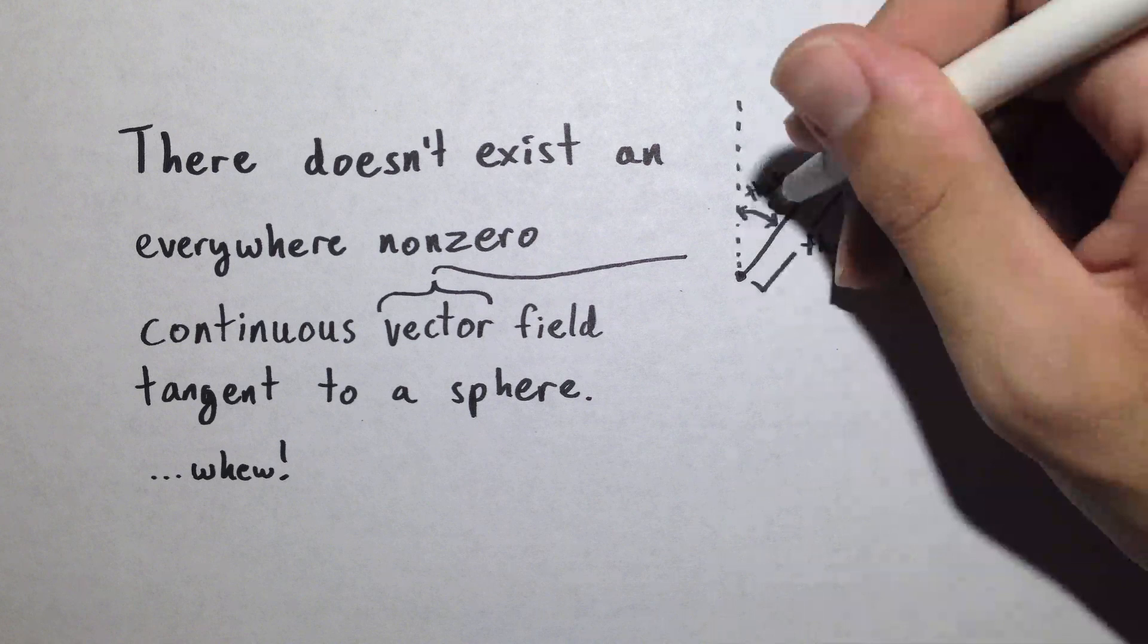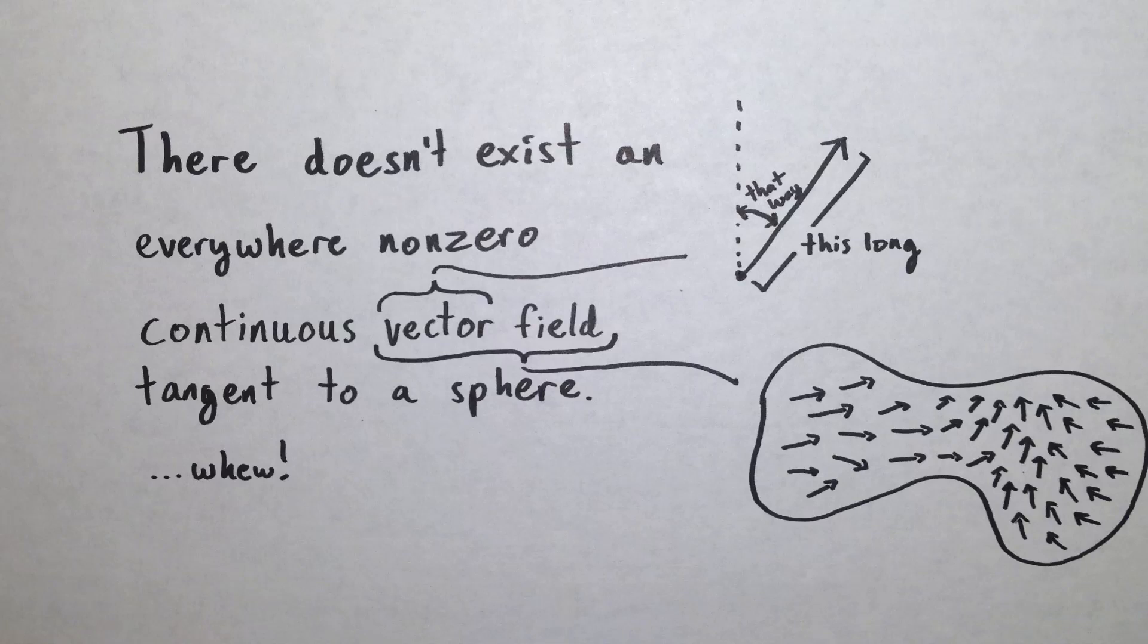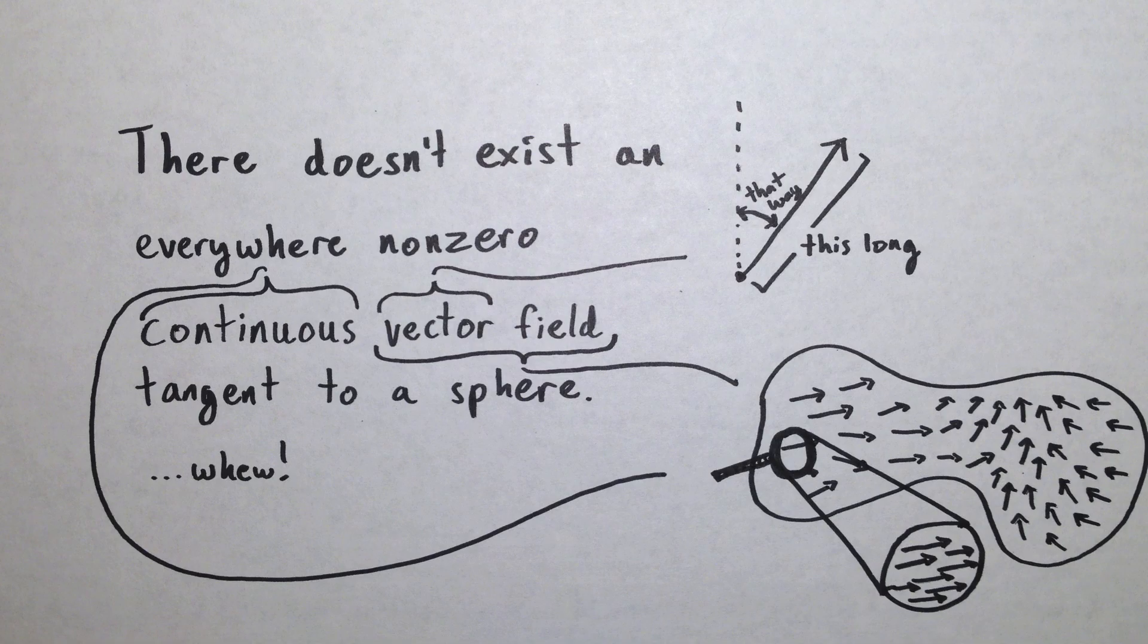We call a vector field continuous if we can zoom in on any point some amount that makes all of the vectors in view look more or less the same, which wouldn't be the case if our vector field had a part.